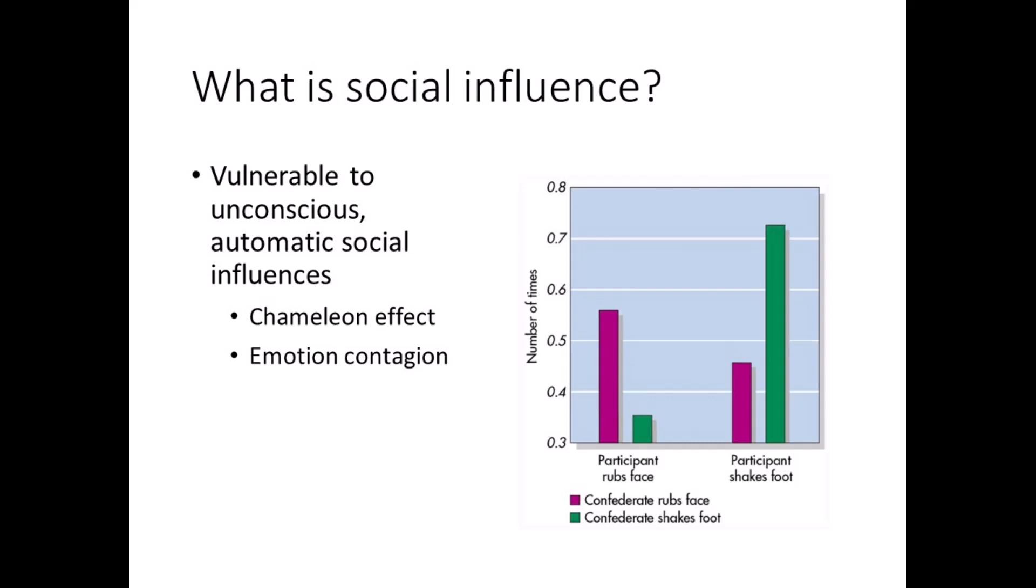Consider the show Who Wants to Be a Millionaire. If a contestant doesn't know the answer to a question, they can call a friend, and they usually call someone who has the knowledge they need to win. This type of influence usually results in private conformity. Recall that Sherif used an ambiguous task, so others provided a source of information and influenced the participants' true opinions.